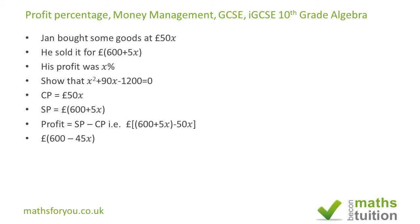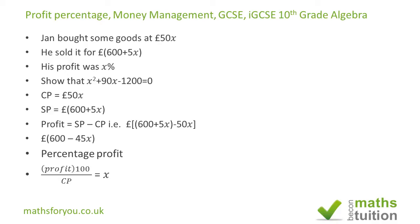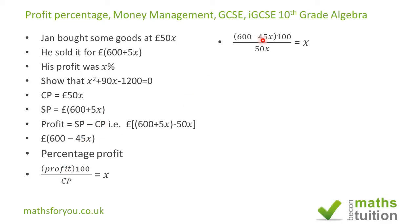For the percentage profit, we divide the profit by the cost price and multiply by 100, which equals X percent. So formalizing: profit, which is 600 minus 45X, times 100 divided by the cost price, which is 50X, equals X.